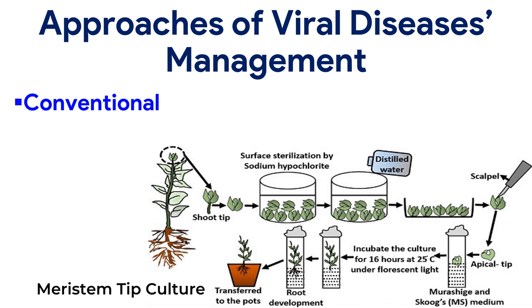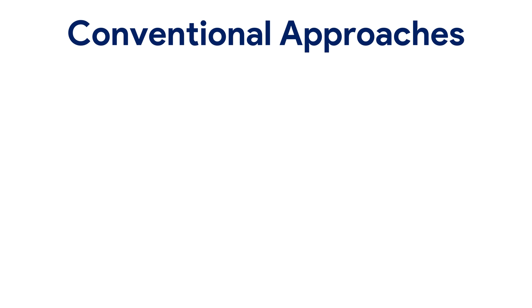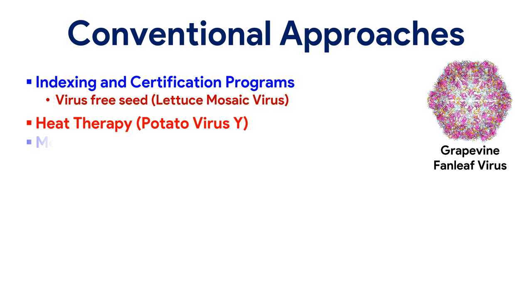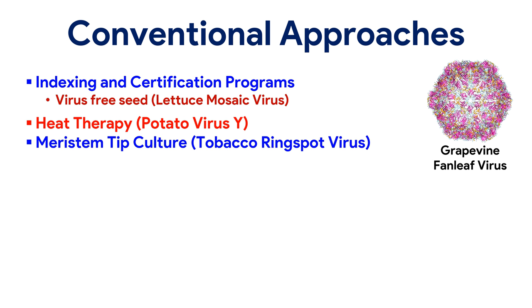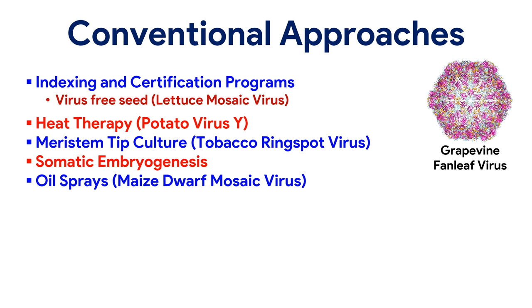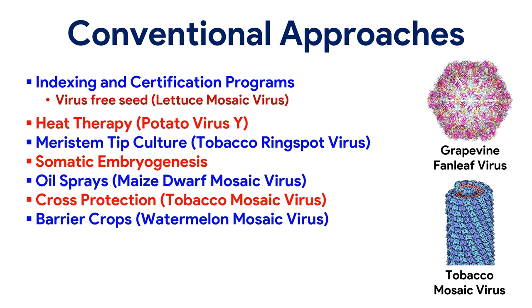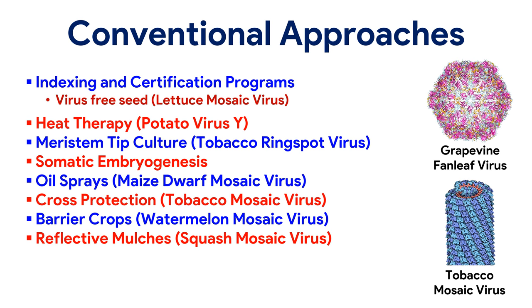Approaches of viral disease management include conventional approaches and biotechnological approaches. The conventional approaches for the management of plant viral diseases include indexing and certification programs, virus-free seed used for the management of lettuce mosaic virus, heat therapy, meristem tip culture used for the management of tobacco ring spot virus, somatic embryogenesis, oil sprays used for the management of maize dwarf mosaic virus, cross protection used for the management of tobacco mosaic virus, barrier crops used for the management of watermelon mosaic virus, reflective mulches used for the management of squash mosaic virus, and natural resistance.